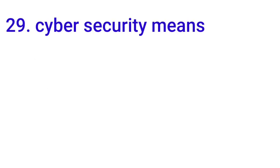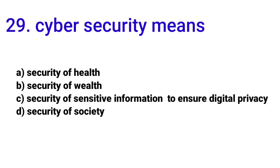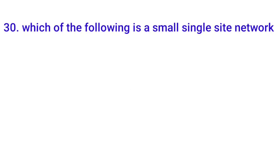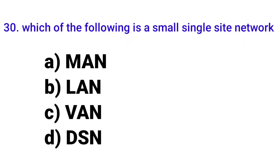Twenty-ninth MCQ: 'Cyber security means security of' — options include security of health, security of wealth, security of sensitive information to ensure digital privacy, and security of society. The answer is option C: security of sensitive information to ensure digital privacy. Thirtieth MCQ: 'Which network is a small single-site network?' Options: MAN, LAN, WAN, DSL. The answer is LAN — local area network.